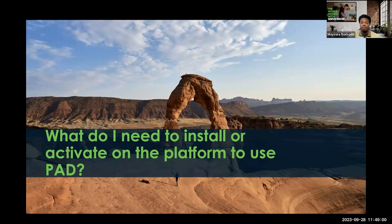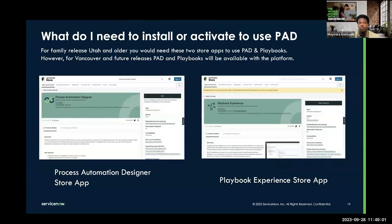Previously, with the UDSTAR family release and anything older, you would need to go and download Process Automation Designer and Playbook Experience from the App Store. However, with Vancouver and future releases, Process Automation Designer and the Playbook Experience will be available with the platform.